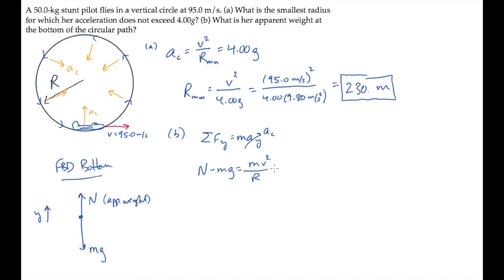We know from part a that v squared over r equals 4 g, so we can substitute that and solve for the normal force by moving the weight to the other side. That shows that the normal force is 5 times her weight. She's pulling 5 g's. And substituting the values shows that this equals 2450 newtons.